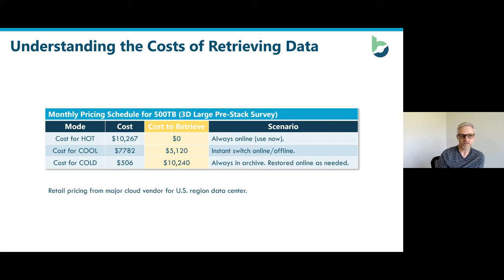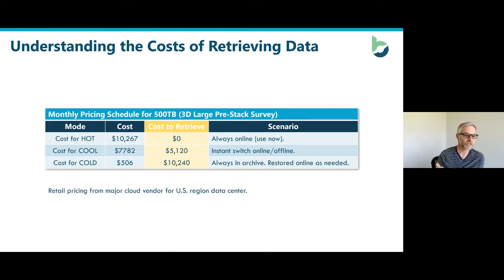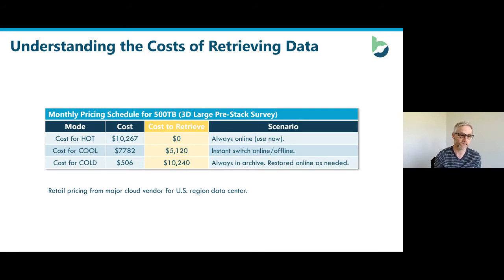You have to understand the cost of retrieving data. This table looks at the three tiers — hot, cool, and cold. The second column is the cost to store half a petabyte for a month. When you add the cost to retrieve, it's almost an inversion: hot data is always online so it costs nothing to restore; cool data costs $5,000 to retrieve; and cold data, which may take 24 hours to bring back online, costs the equivalent of storing the data online for a full month. So if you're bringing that data online every month, it soon becomes more cost-effective to keep it online.